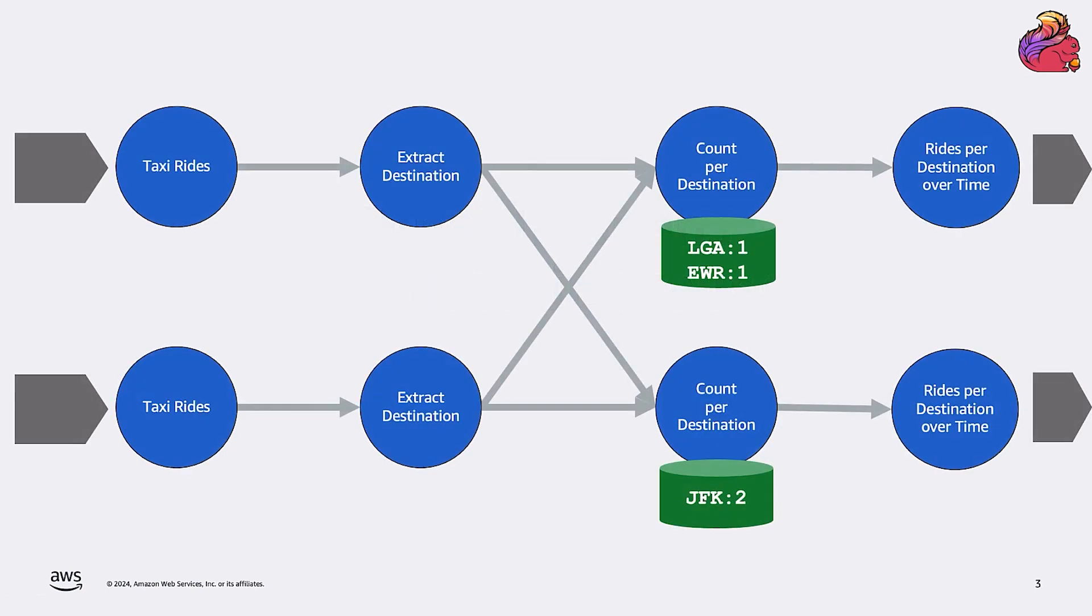We have seen how the application may keep state over time, the count of trips to airports, for example, and we have seen how Flink sends all the records with the same key, all trips to the same airports, to the same processing node. This way, we may keep the state of a particular key, or the count of the trips to a particular airport, stored directly on the node that is receiving all the records of that key.